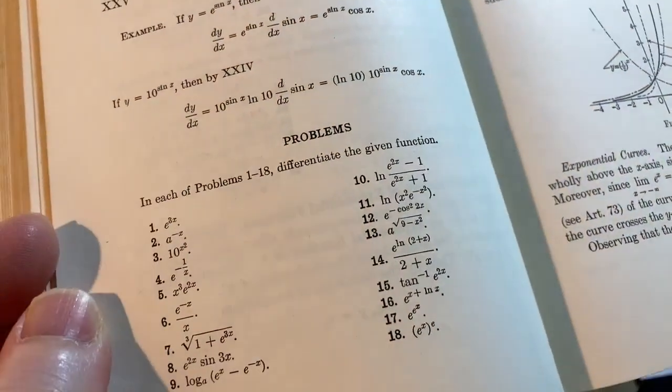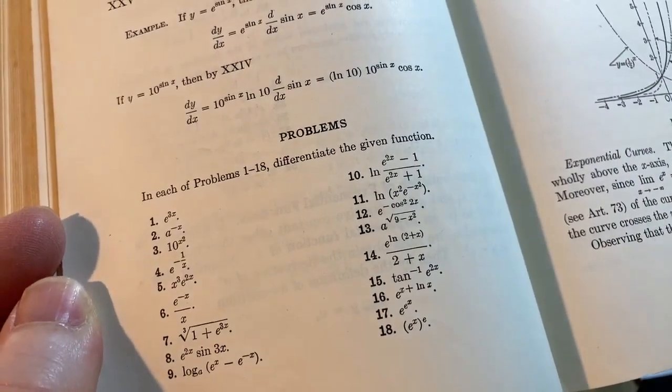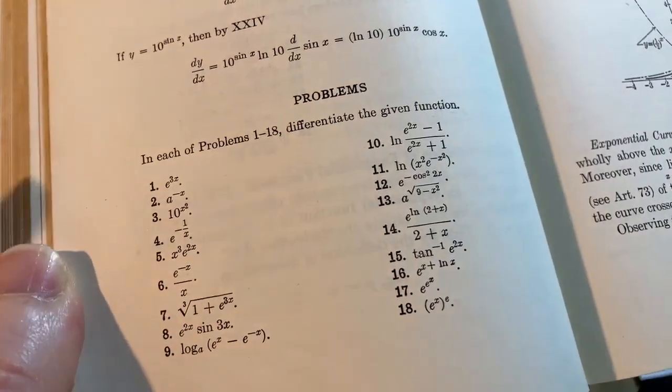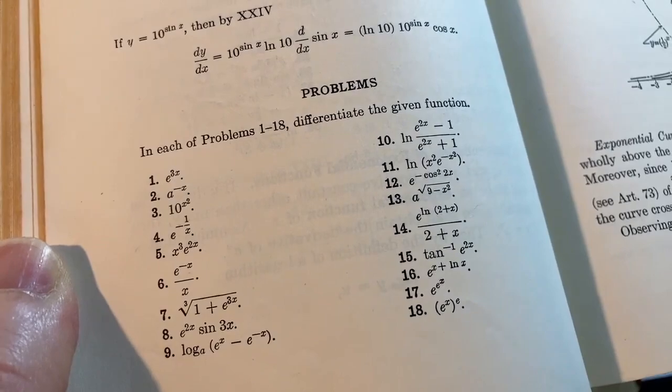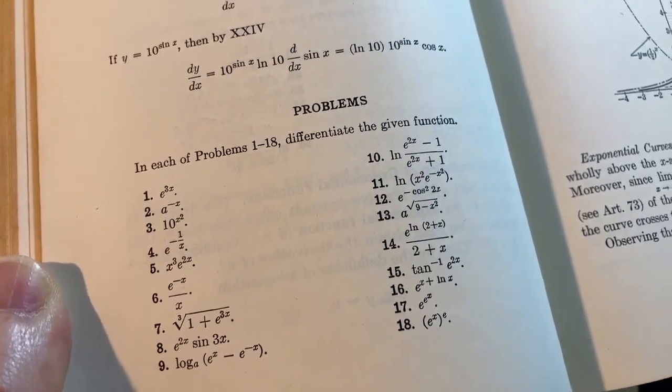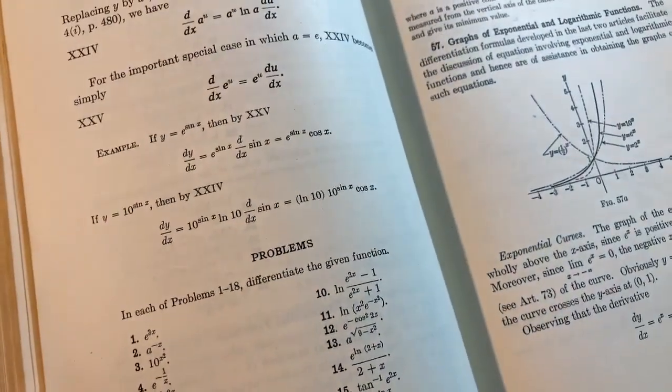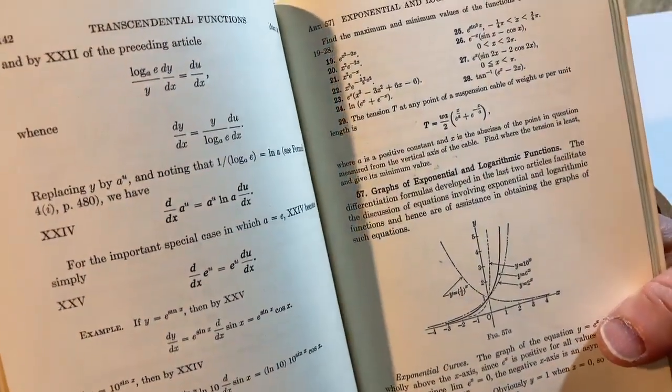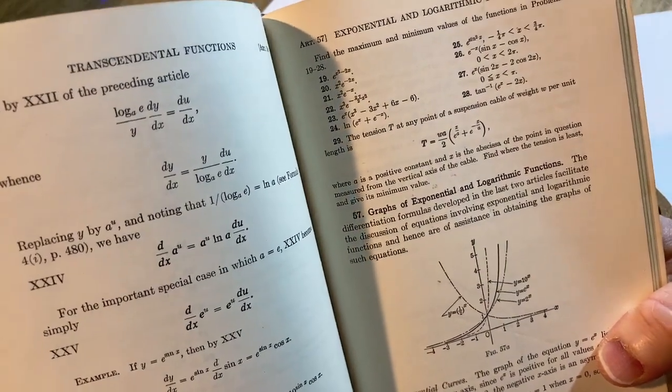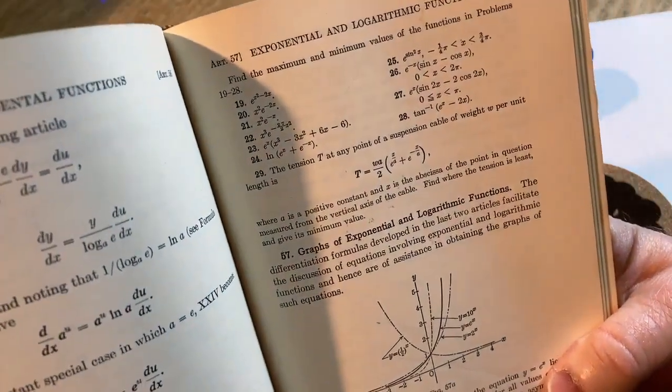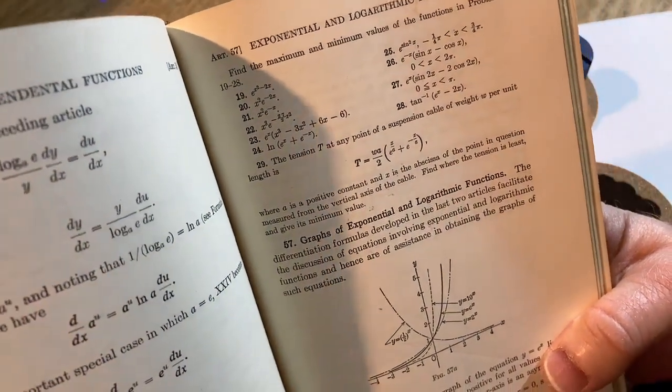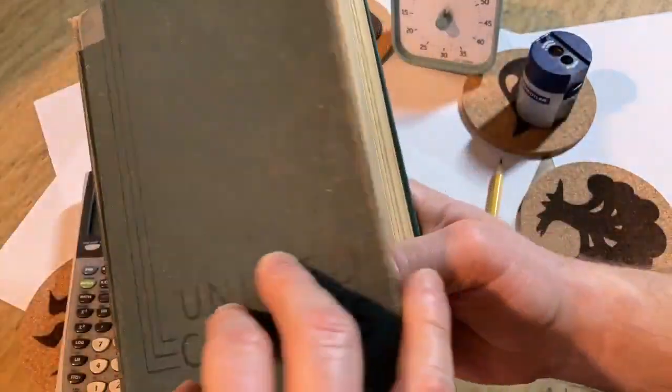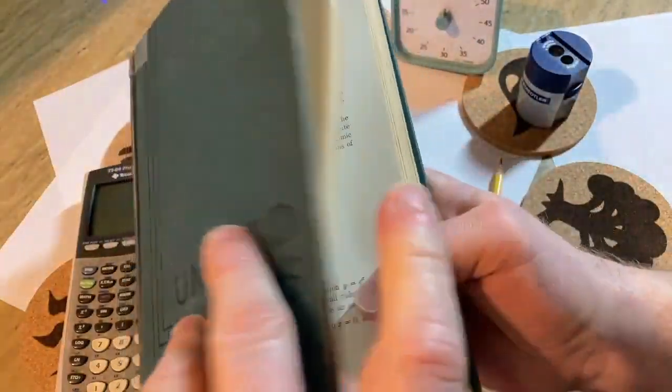So here's some exercises. In each of problems 1 through 18, differentiate the given function. So they're pretty easy. It's not a hard book, pretty good for beginners. By the way I paid like, I'm not exaggerating here, definitely less than $10 for this book. Super inexpensive. Maybe I got lucky, but I'll try to leave a link in the description. I don't think this book is pricey. I think there's plenty of copies on the internet. I think it's called Unified Calculus because it was so popular. We're looking at the 14th printing.